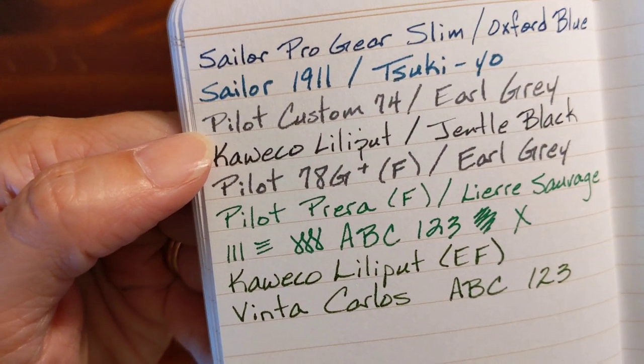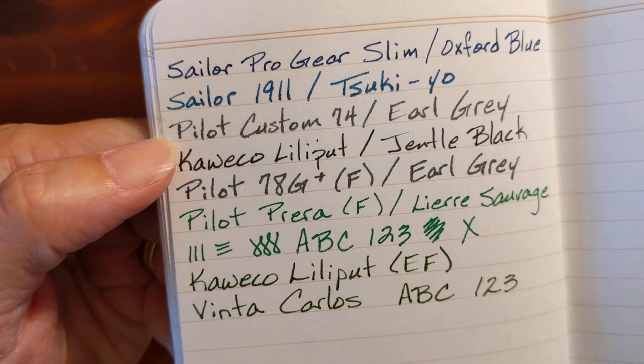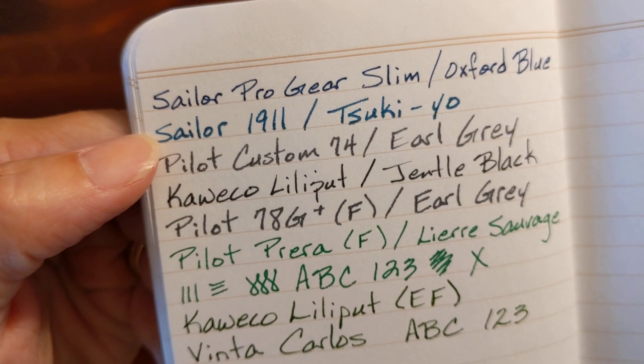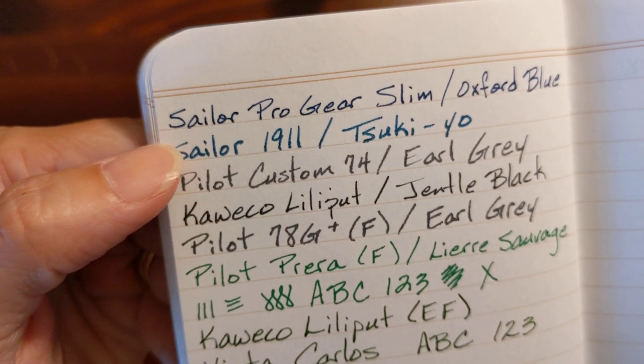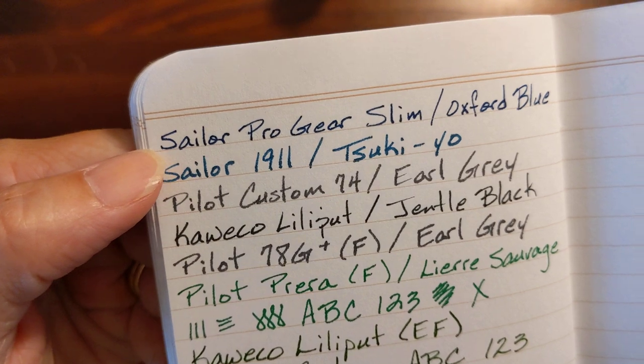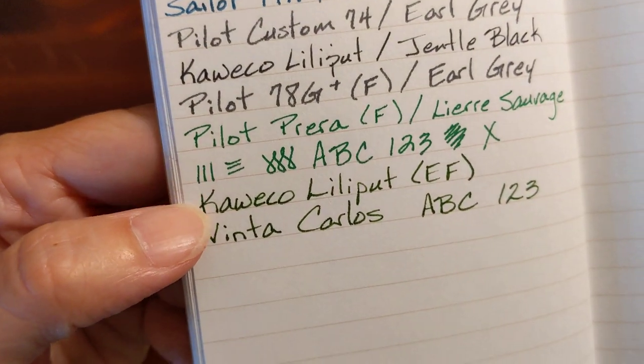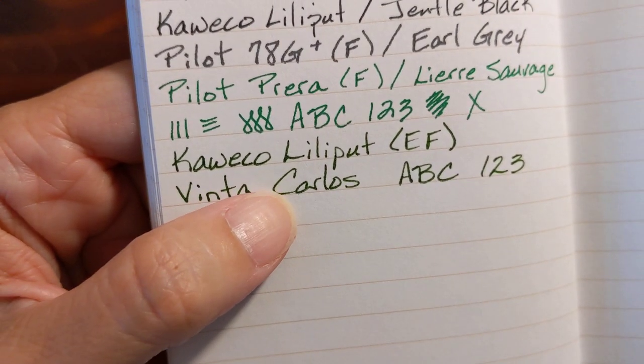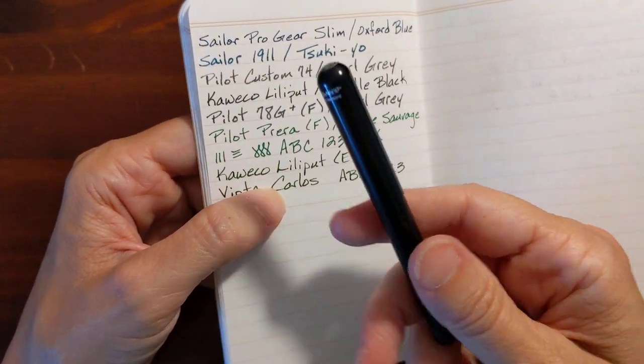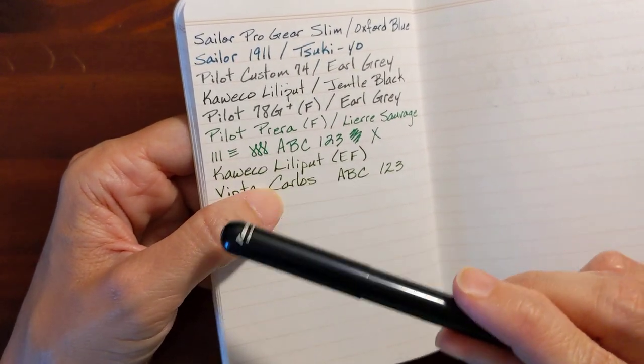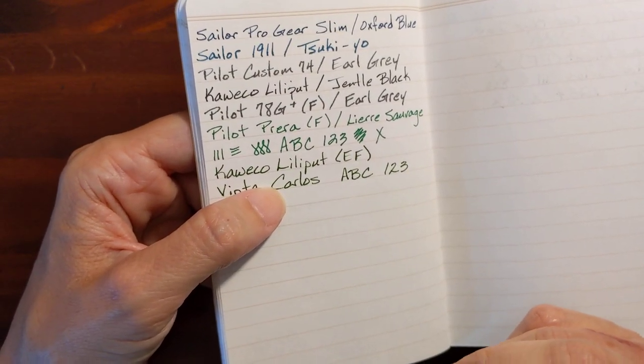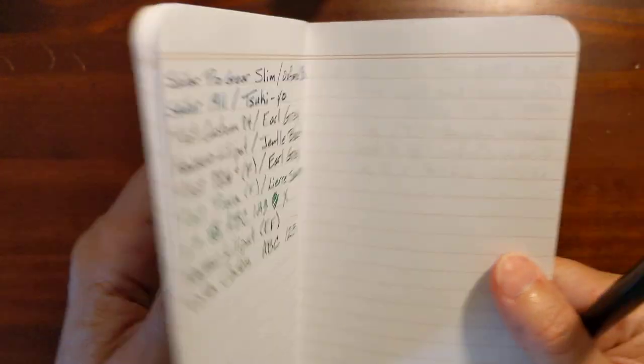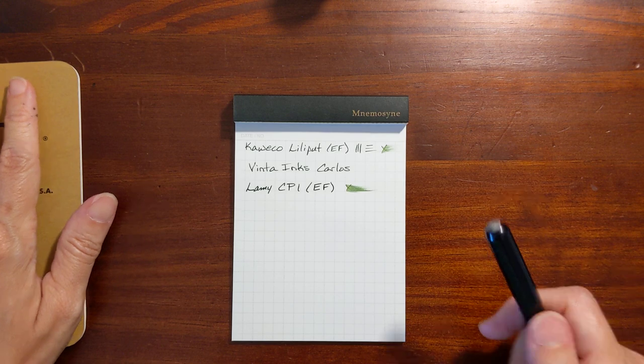And yeah see my Diamine Earl Grey it feathered. I was kind of disappointed Tsukiyo feathered in this one but that's in a medium nib you have to take that into consideration. But the line stays nice and crisp. This pen writes dry enough that I'm going to be able to use that as a note taker and I think it'll be enjoyable.